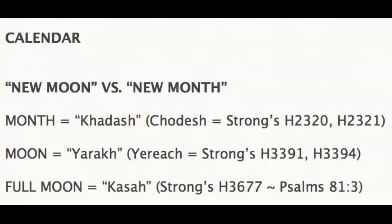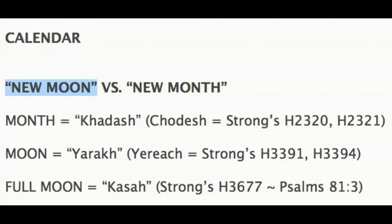Now I have listed right here the difference between the phrase 'new moon' and 'new month,' because in the Yahudiath Hebrew language they are two different words. The word for month is Kadash, from Strong's H2320 or H2321. There are also two different words that mean moon: the first is Yarak, Strong's H3391 and H3394, and then the phrase 'full moon' which means Kasa, from Strong's H3677, found in Psalms 81:3. The question is: should your scripture say 'new moon' or 'new month'?